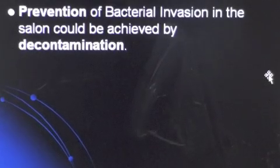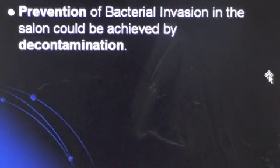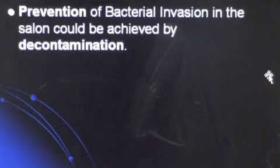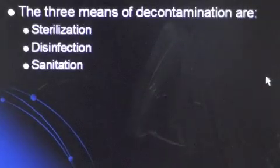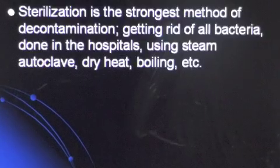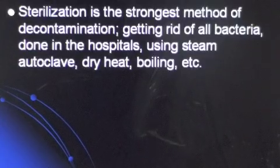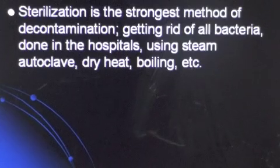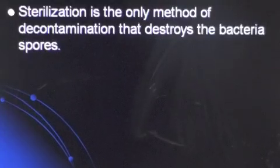Prevention of bacterial invasion in the salon can be achieved by decontamination. Every surface is contaminated, so decontamination would get rid of contaminants. The three means of decontamination are sterilization, disinfection, and sanitation. Sterilization is the strongest method, getting rid of all bacteria, done in hospitals using steam, autoclave, dry heat, boiling, etc. Sterilization is the only method that destroys bacterial spores.